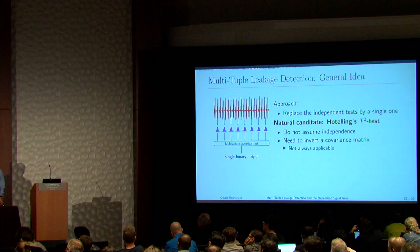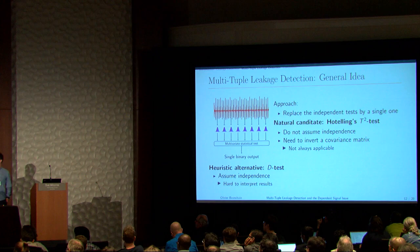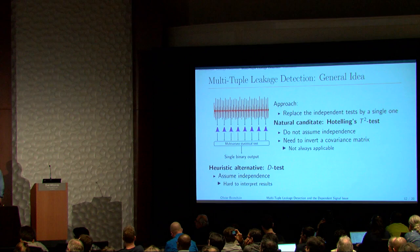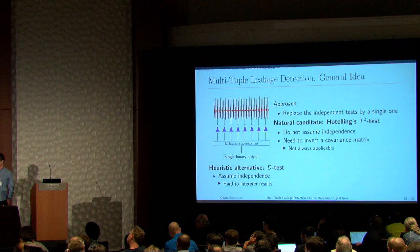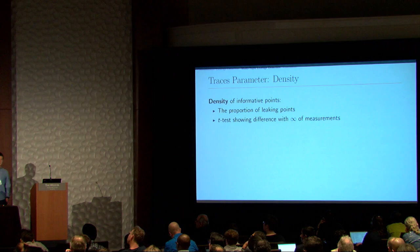Another solution we came up with, when you cannot compute the full covariance matrix, is the D-test. It's more heuristic and is essentially an extension of the Hotelling T-square test but assuming independence — so you don't need that huge covariance matrix. Because it's based on a potentially incorrect hypothesis, the results are harder to interpret.